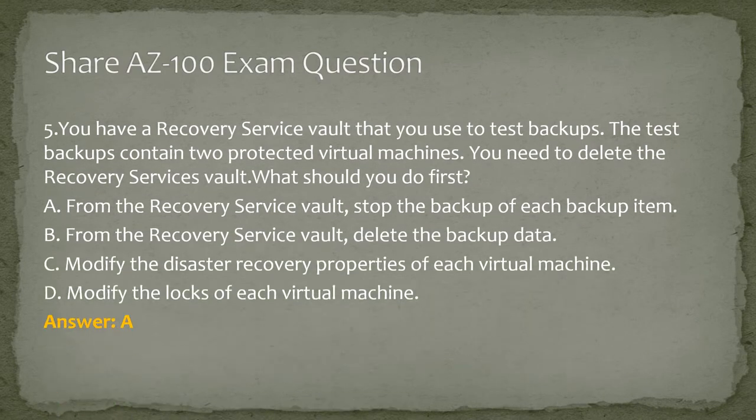Question 5. You have a recovery service vault that you use to test backups. The test backups contain two protected virtual machines. You need to delete the recovery services vault. What should you do first? A. From the recovery service vault, stop the backup of each backup item. B. From the recovery service vault, delete the backup data. C. Modify the disaster recovery properties of each virtual machine. D. Modify the locks of each virtual machine. Answer: A.